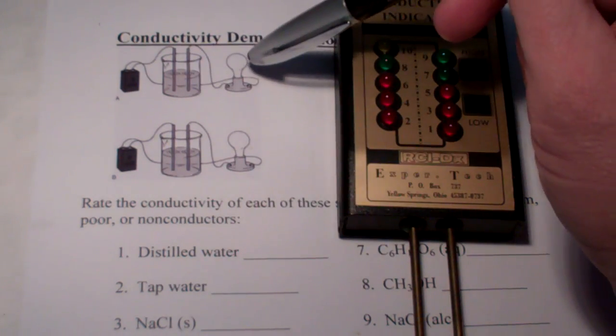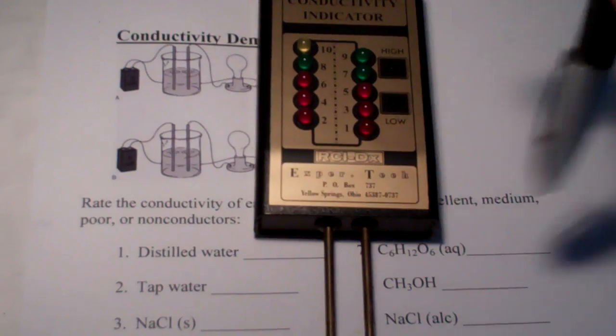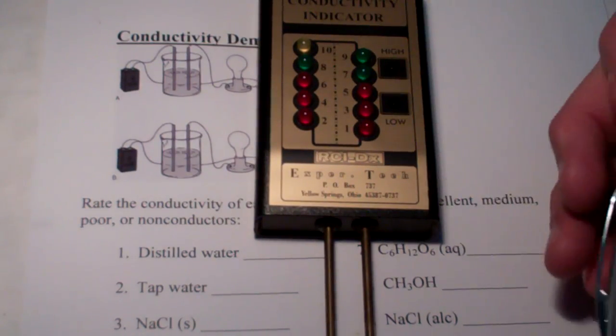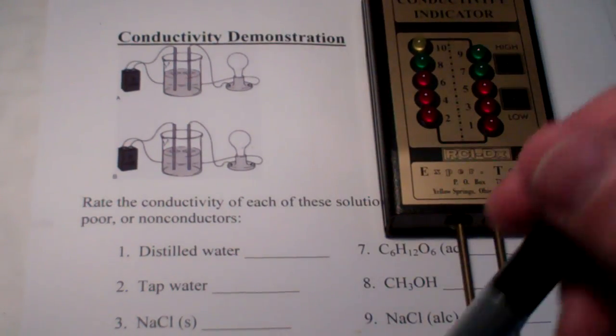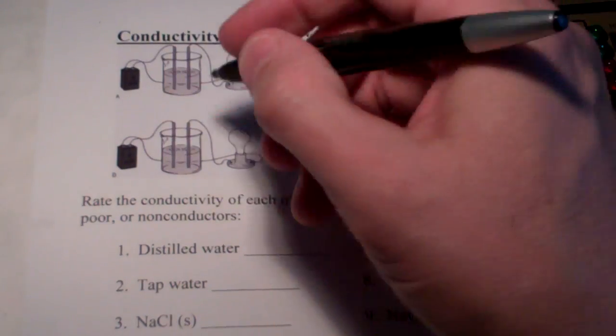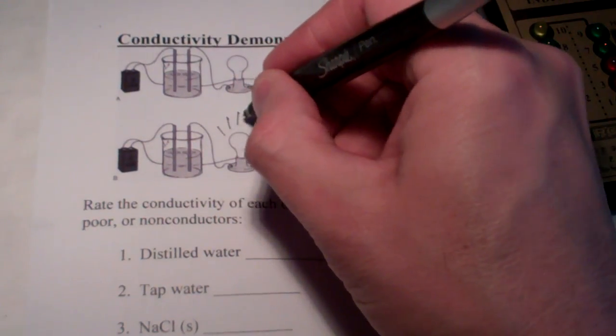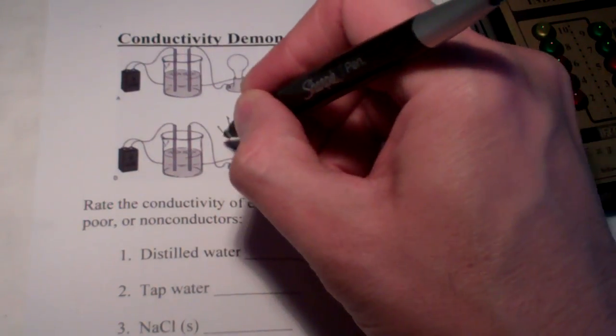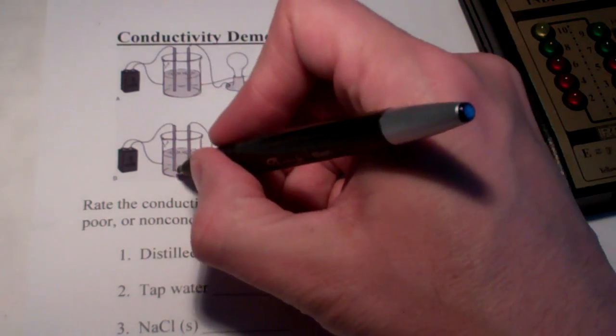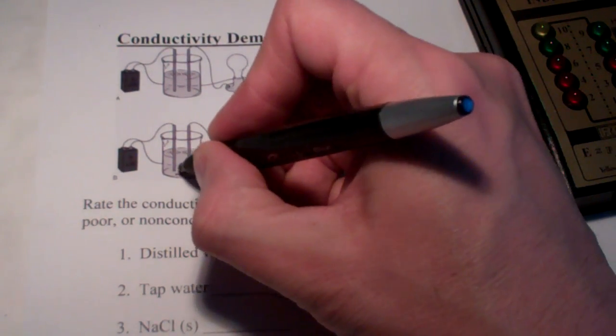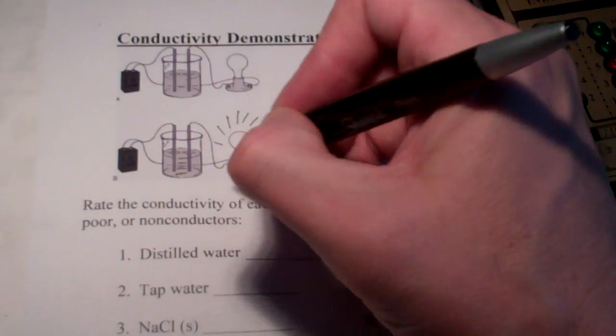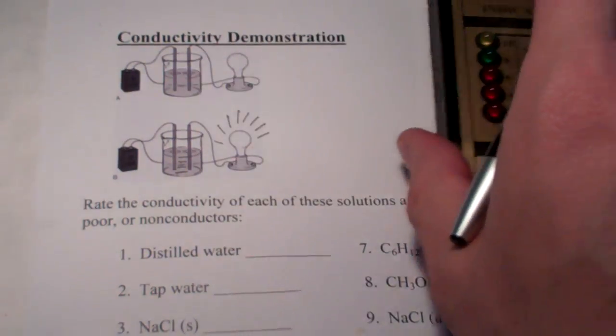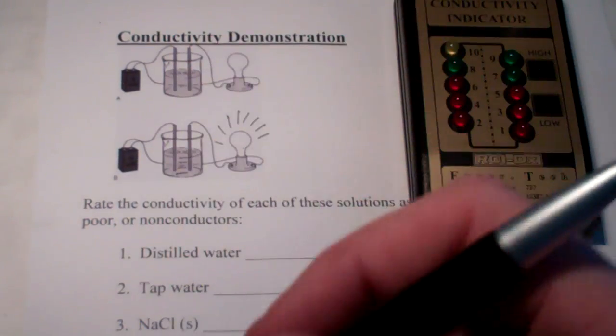Now, there's something in some of these solutions that allows the current to be transferred from one electrode to the other electrode. We can identify that by the light bulb lighting up, or in this case, our indicators lighting up to tell us how conductive it is. So, if the light bulb is on, there's something that is completing the circuit between those electrodes. If it's off, of course, nothing can complete that circuit.